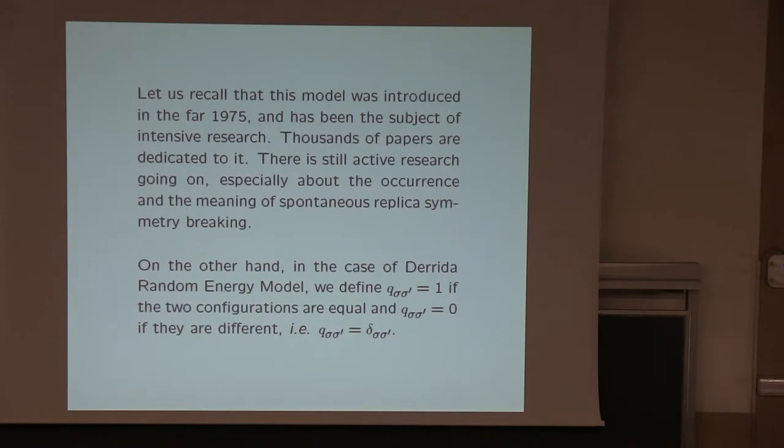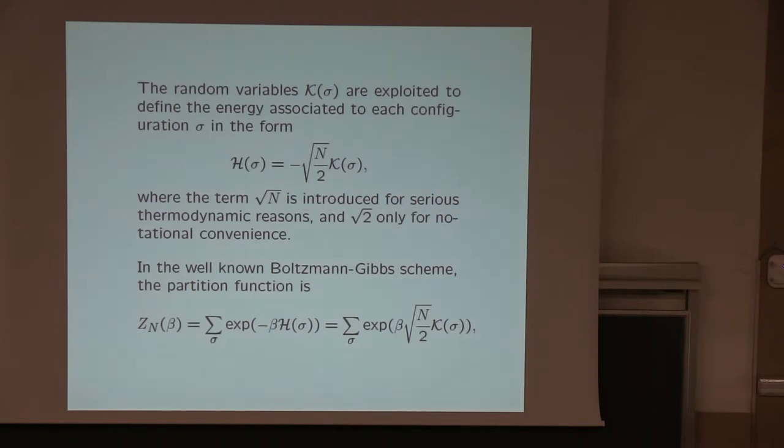This is a celebrated Sherrington-Kirkpatrick model. It was introduced in 75, but there has been a flow of papers, thousands of papers, and still research is going on. How to implement the case? This is very simple, because you can write with a triangular random matrix J_ij. You write using a random interaction with proper normalization. So you implement all cases, even when n becomes different, in the same probability space, which is useful in some cases. This is 75. And for the Derrida random energy model, the variances are given by delta functions. So they are independent fields, random fields for each configuration. Comes from nuclear physics.